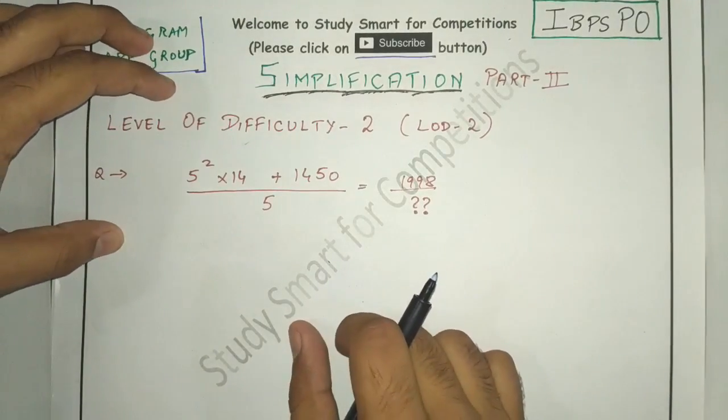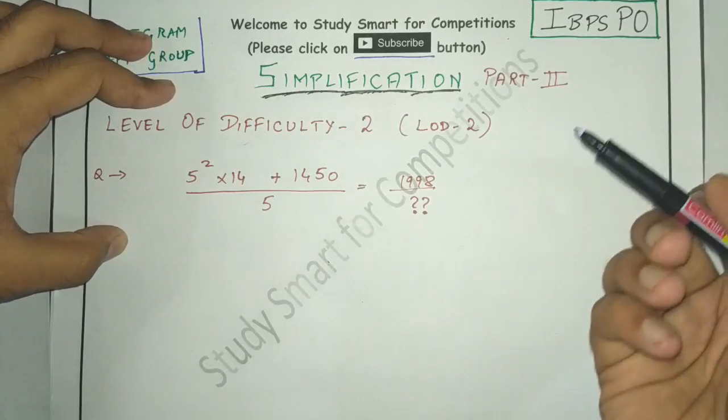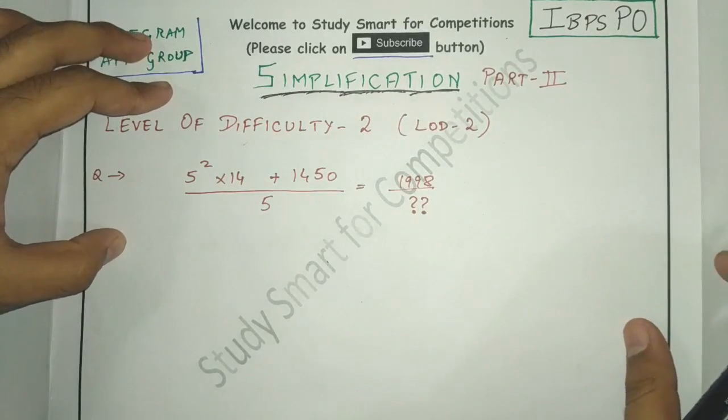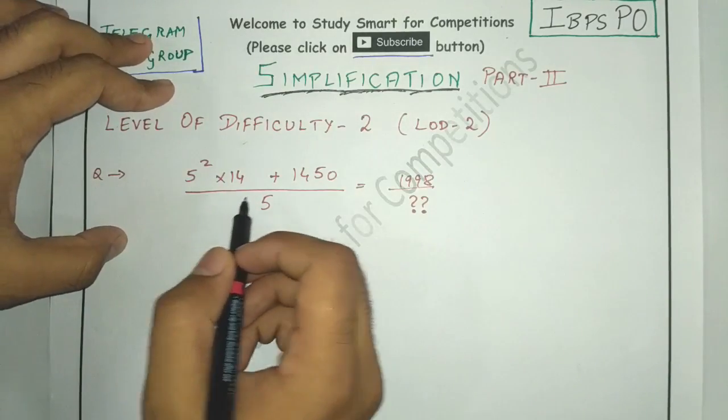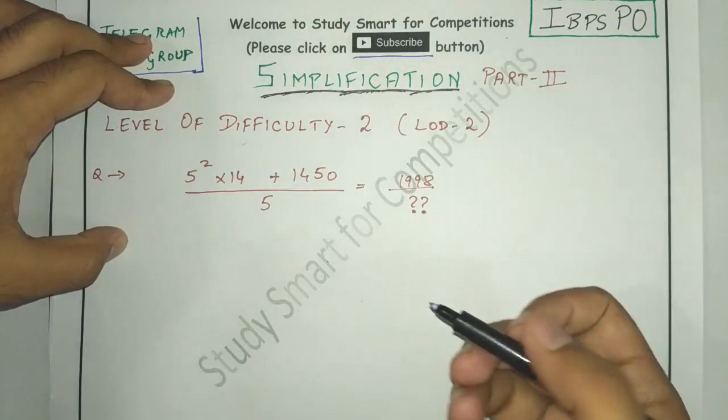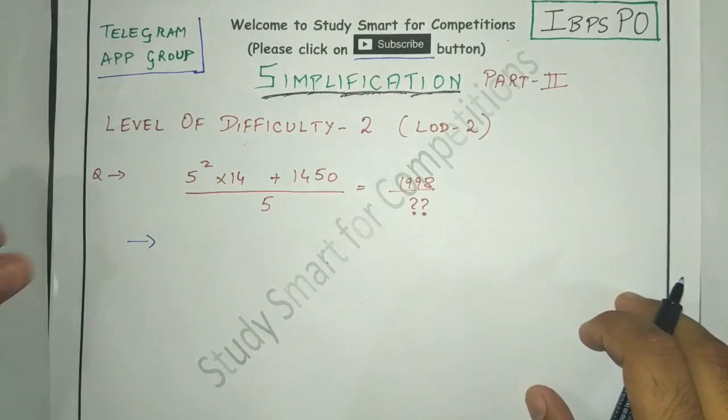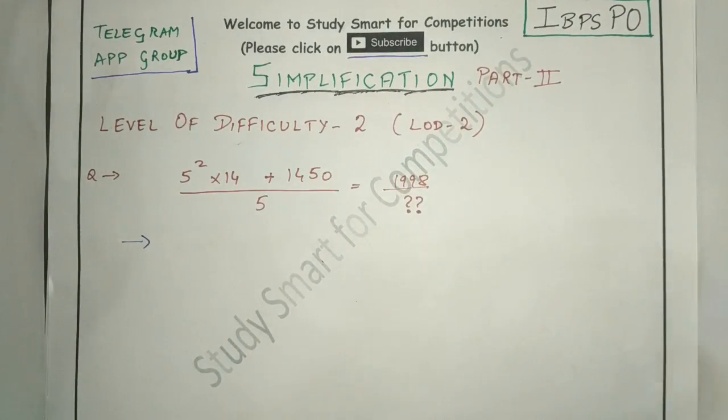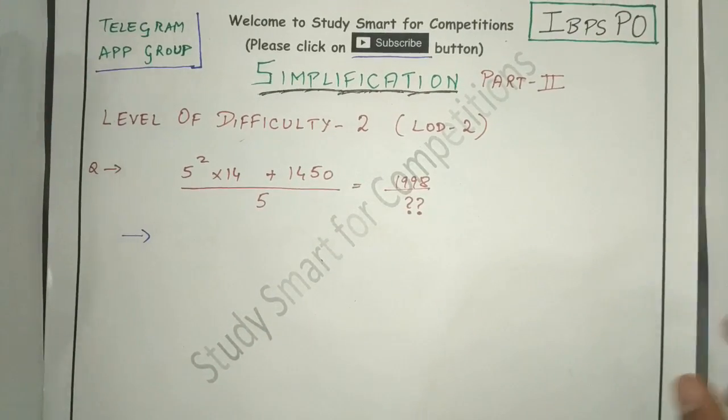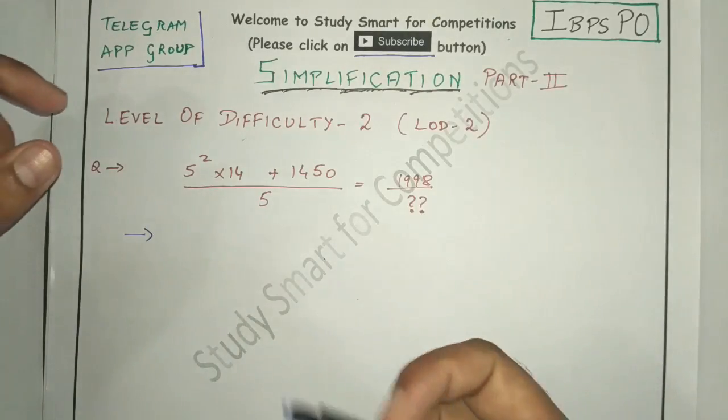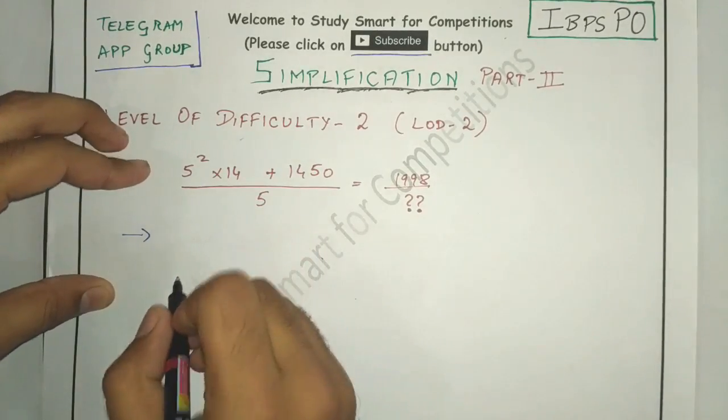First question says 5 square into 14 plus 1450 divided by 5 equals to 1998 divided by x. There are two options. Firstly, you can just multiply it by 25, that is five square, and then add it to 1450 and divide. One more addition before going ahead: you might just pause your video and try it on your own and check how much time you actually take.